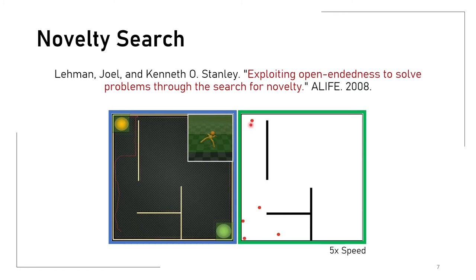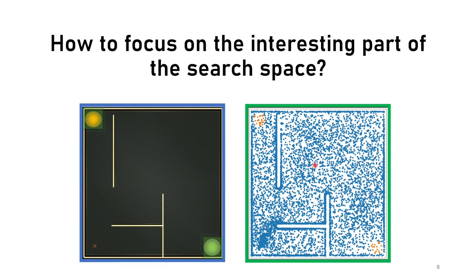The algorithm then selects the most novel policies to generate the next generation. Novelty Search is very powerful for exploration and can cover the behavior space quite well, but it has a big problem: if there is any reward, the algorithm completely discards this information and has no way to focus on the interesting parts of the search space. In the ant example with two rewarding areas, the rewarding regions are explored the same way as the rest of the space, so obtaining the highest reward requires being lucky, as the algorithm will not optimize toward it.